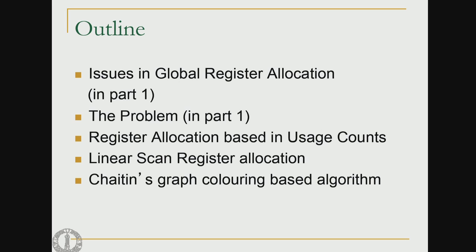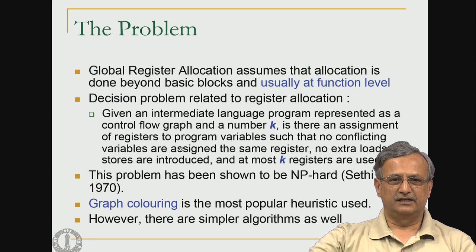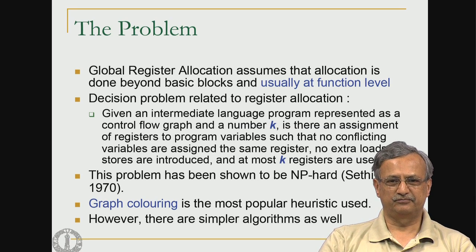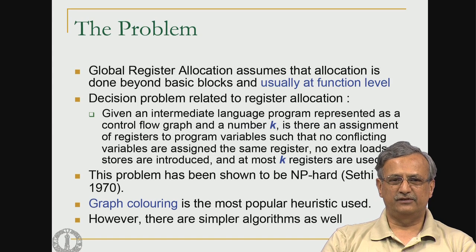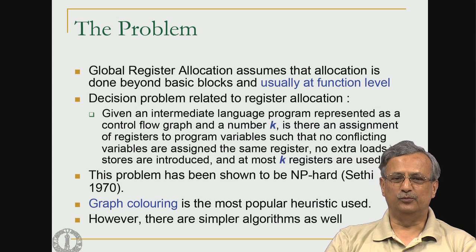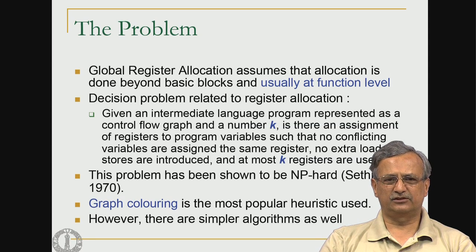Let us begin with the problem definition. Global register allocation assumes that allocation is done beyond basic blocks and usually at the function level. We are not limited to just basic blocks but can also do it at a higher level — namely the function or a group of loops. This is much better than local register allocation because it saves a lot of stores and loads at the boundary of basic blocks.